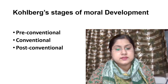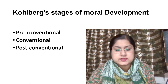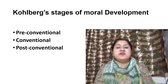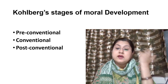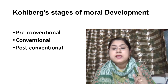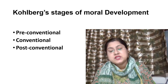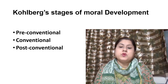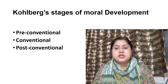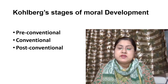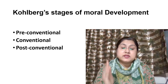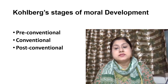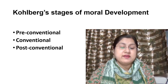Kohlberg identified three levels of moral reasoning: the first is pre-conventional, then conventional, and post-conventional. Each level is associated with increasingly complex stages of moral development, and each level contains two stages which provide the basis for moral development in various contexts.